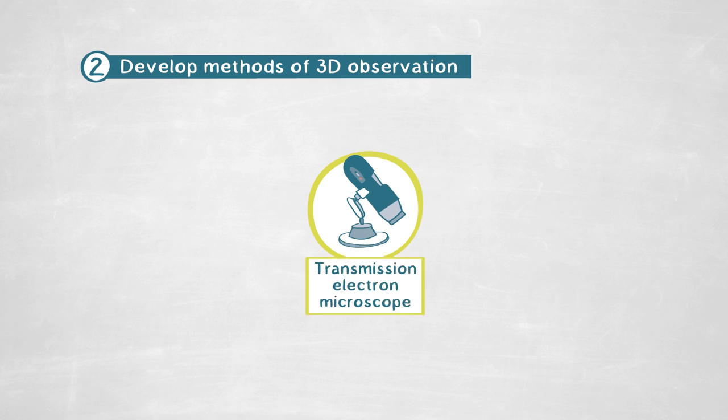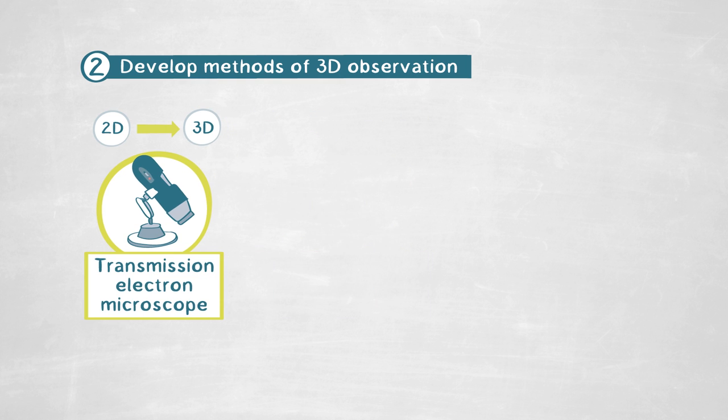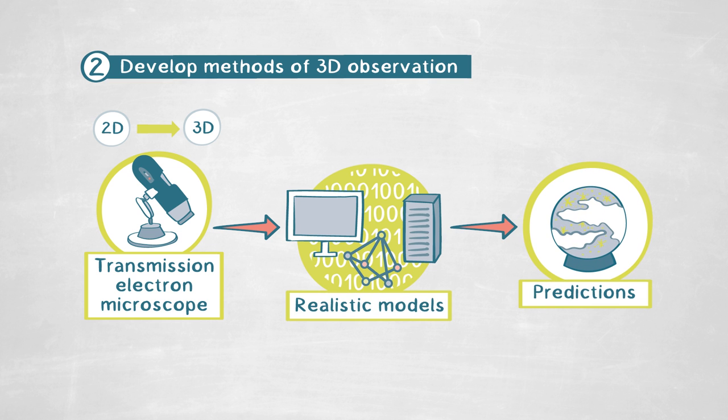One limitation in the transmission electron microscope is that we only look in projection, losing the third dimension. We are developing methods to retrieve every atom in three dimensions within these defects, so we can build realistic models to make predictions about interface properties and ultimately our materials.